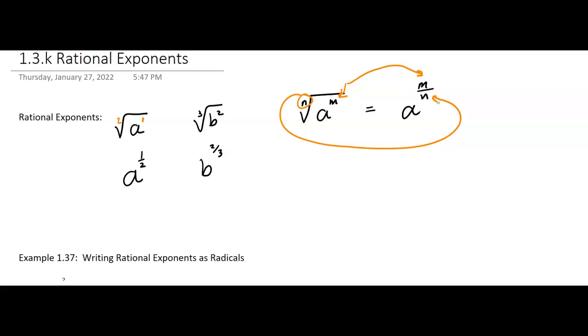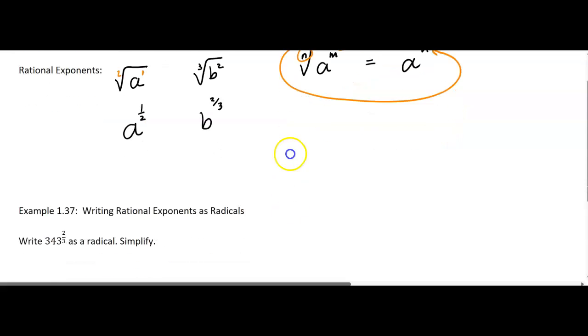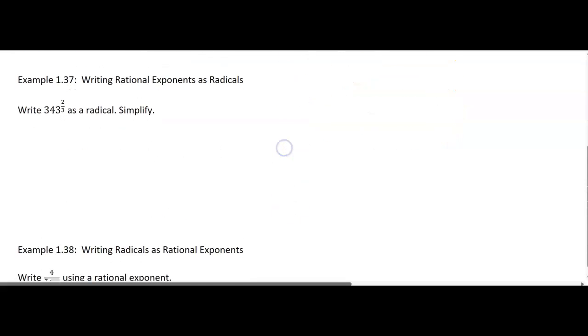All right. So we have a couple examples where we can practice. It says write 343 to the two thirds as a radical and then simplify. So you've got the 343. That's the base. And it's going to be a radical. Now the numerator is going to go here, two, and then the index is going to be the three, the denominator.